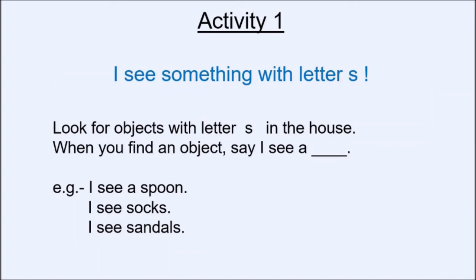I see something with letter S. Children, you have to look for objects with letter S in the house, and when you find an object you have to say I see a the name of the object. For example, if you see a spoon you have to say I see a spoon, or if you see socks then say I see socks, I see sandals. And remember the sound of letter S is so and not sure, it is so.